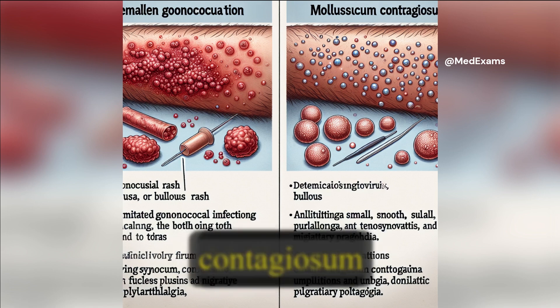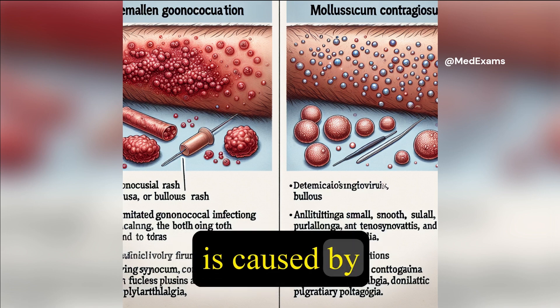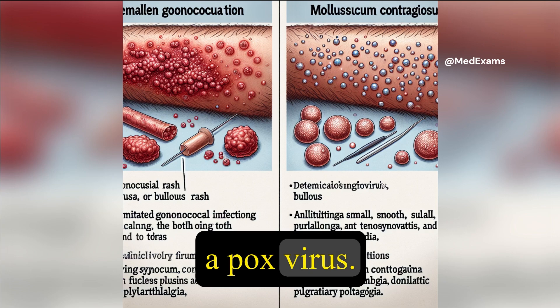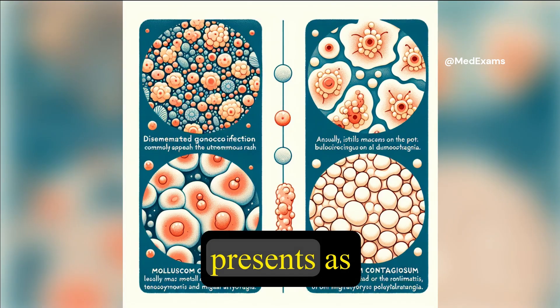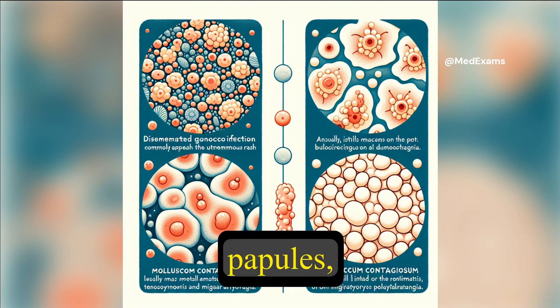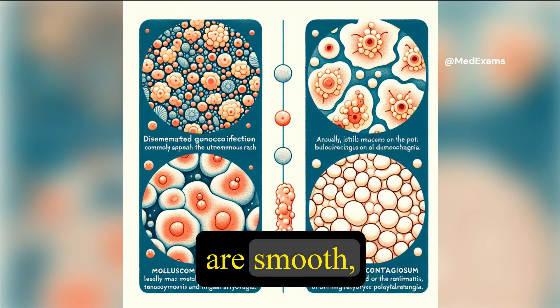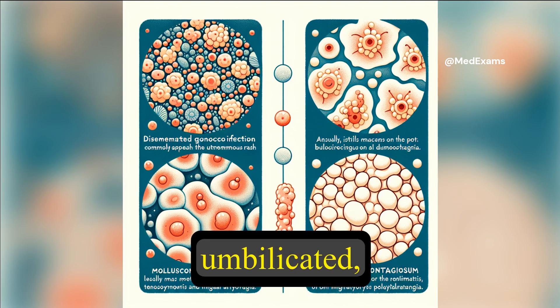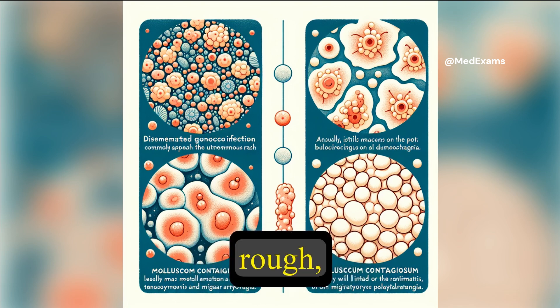Choice E: Molluscum contagiosum is caused by a pox virus. Although it commonly presents as small papules, the lesions are smooth, pearly, and umbilicated — unlike the rough, dry lesions in this patient.